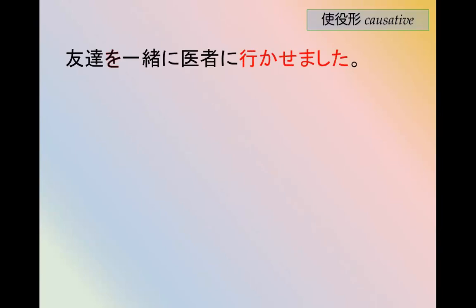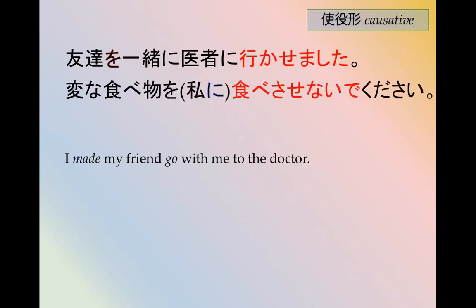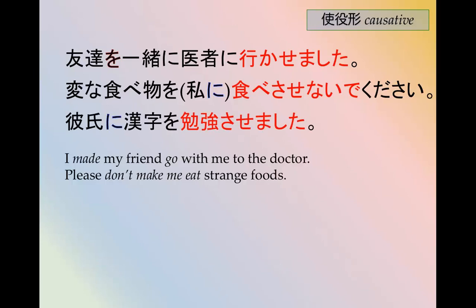Let's look at the causative, the shihike, the causative form — to let or make someone do something. Here are some examples. 友達を一緒に医者に行かせました。 I made my friend go with me to the doctor. 変な食べ物を食べさせないでください。 Please don't make me eat strange foods. 彼氏に漢字を勉強させました。 I made my boyfriend study kanji.